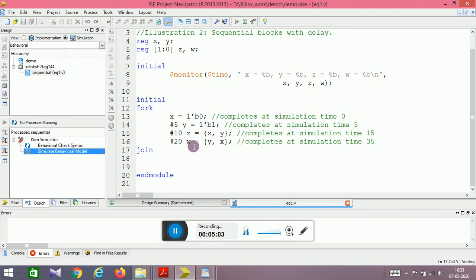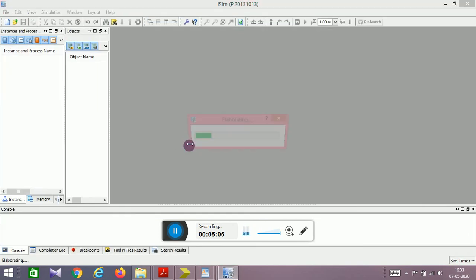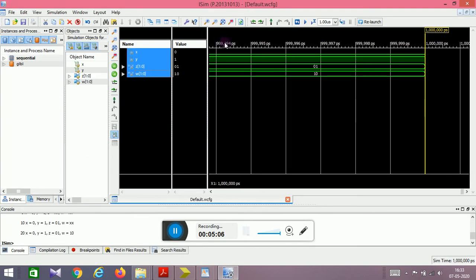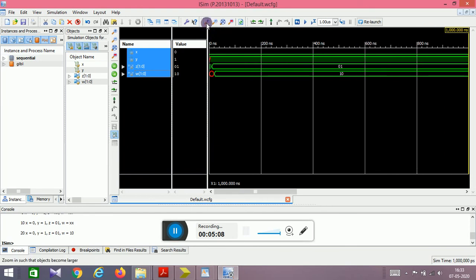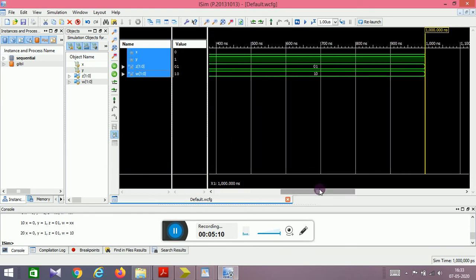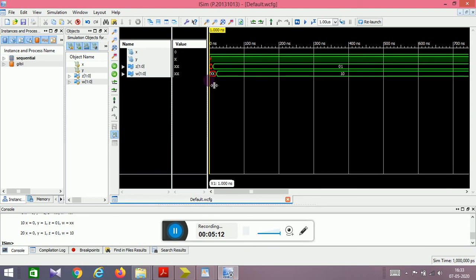In the earlier case, it took 35 time units to get value assigned to W. Now in this case, the value for W will be assigned at 20 time units itself. Zoom to fit. At 5 time units, Y gets assigned the value. Z will be assigned at 10 time units, not 15 now, and W will get its value at 20 itself, not at 35. This shows that the code executes parallelly.